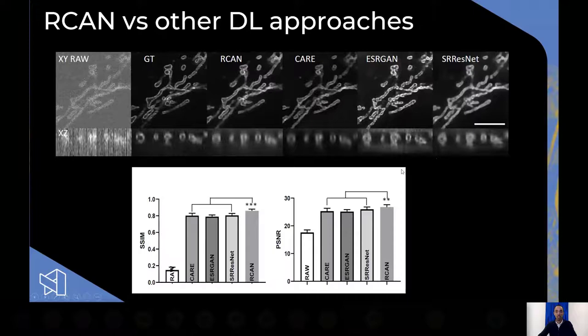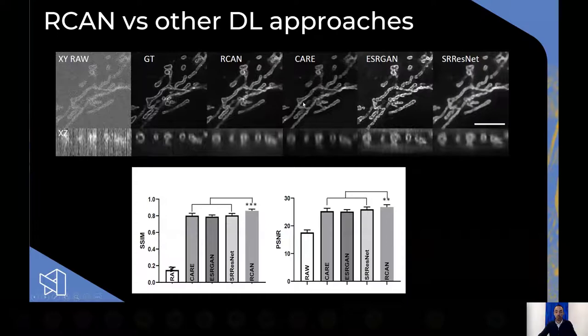We also compared 3D ARCAN to other neural networks: CARE, ESRGAN, and SSRNET. Results are pretty similar across the board, though in Z, ARCAN is slightly better than CARE. ESRGAN and SSRNET are definitely worse than ARCAN and CARE, but overall the performance is comparable.